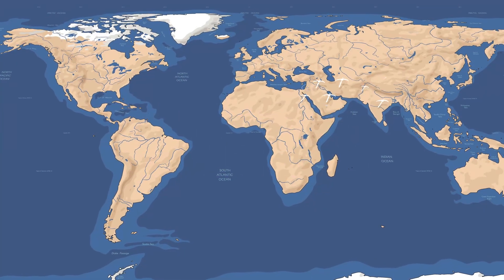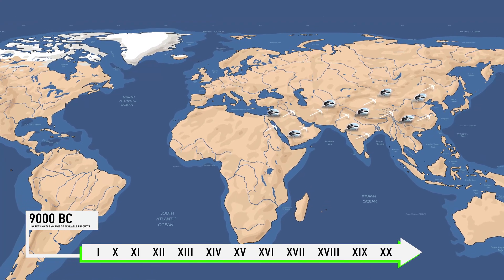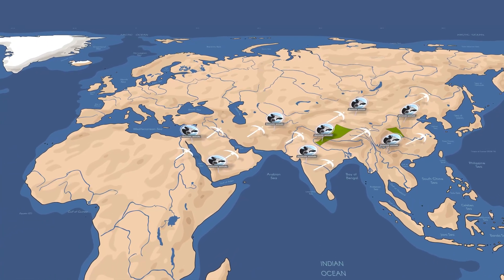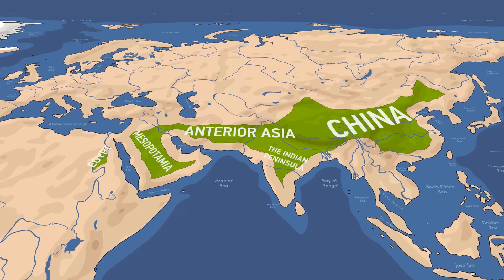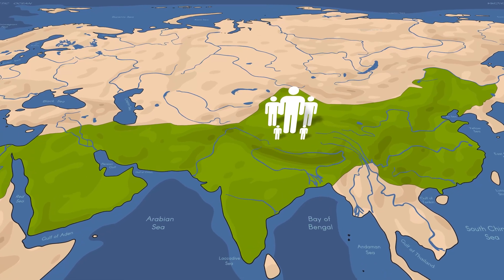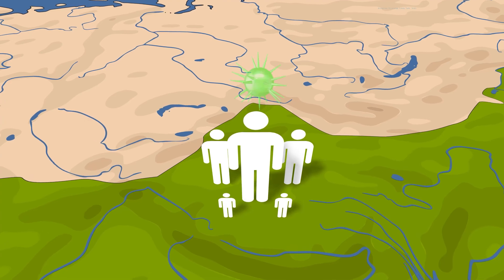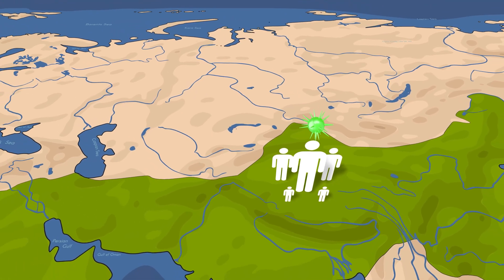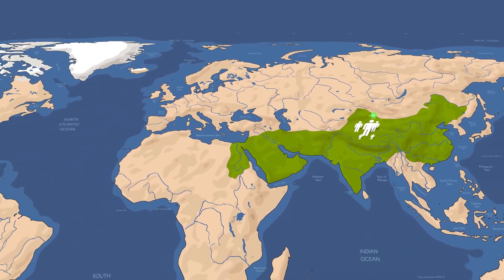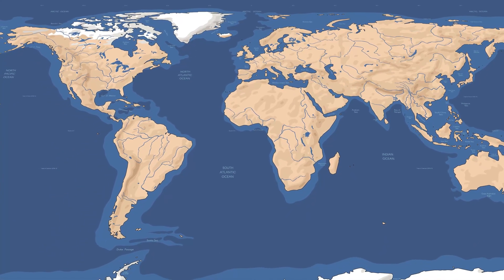The development of new forms of farming, agriculture, and cattle breeding at the beginning of the Neolithic allowed increasing the volume of available products. This led to a numerical increase in the populations of Mesopotamia, Anterior Asia, Egypt, the Indian Peninsula, and China. At the same time, the increase in population density and daily contact with domesticated animals led to attacks by new species of viruses and bacteria on the human body, and a rapid spread of new diseases in densely populated regions. It was in these territories that the first epidemics erupted, echoes of which we find when reading ancient religious texts.